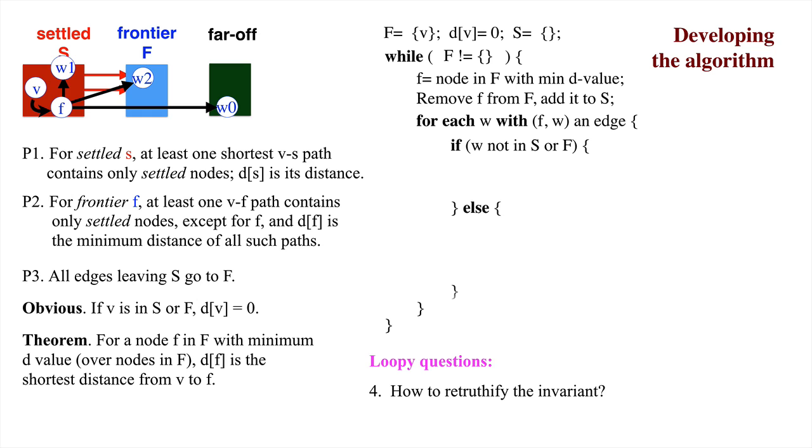First, w is in the far offset. And second, w is in the settled or frontier sets. So we have an if statement. If w is in the far offset, like w0, set d sub w to d sub f plus the weight of the edge from f to w. And then put w into the frontier set. After this is done for all edges f w with w in the far offset, p3 is true.